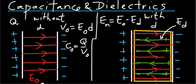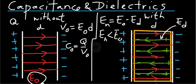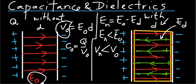And now we know the net electric field has to be less than the original E0 field, as represented in the first diagram. What this also means: the potential difference across the capacitor with dielectric in between the plates must also be less than the potential difference in the capacitor with a vacuum in between.